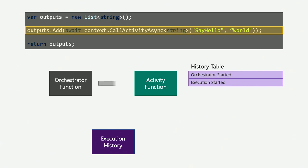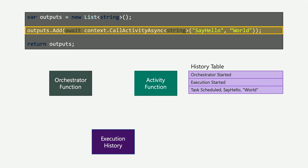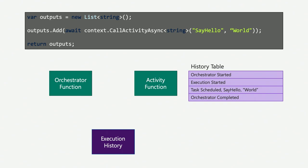The durable function asks the execution history: have I already said hello to the world? The execution history says no, you haven't done this yet. So it goes ahead and schedules the work — it drops a message in a managed queue saying we need to say hello to the world. After that, your durable function stops. It schedules its task and waits to get triggered again. At this point, your activity function — your say hello function — has work scheduled for it, so it wakes up and triggers.